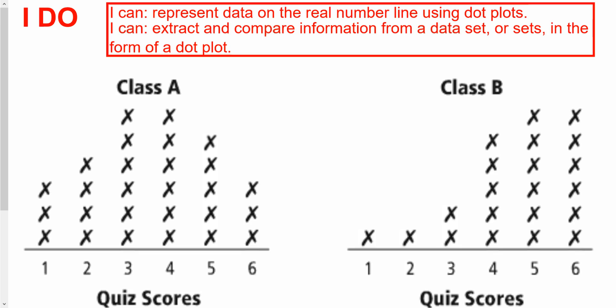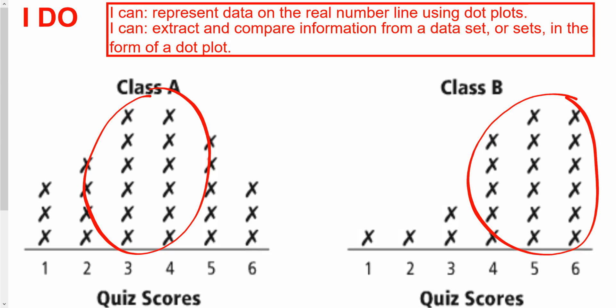Looking at these two classes — Class A and Class B quiz scores — who do you think performed better? Well, visually it seems kind of obvious. It looks like over here in Class B we have a lot of students performing better. The majority of students in Class B are in the 5 and 6 range, but in Class A the majority are sitting at a score of 3 or 4. So visually, this is actually not a hard question to answer.